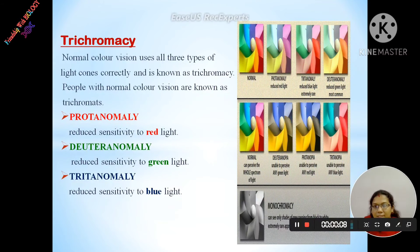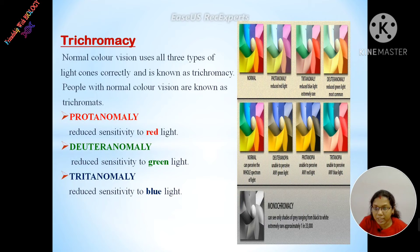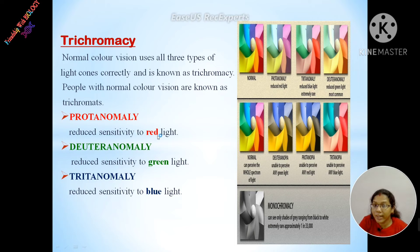Trichromacy refers to people with normal color vision. But in the case of Protanomaly, there is reduced sensitivity to red light. In the case of Deuteranomaly, there is reduced sensitivity to green light. In the case of Tritanomaly, there is reduced sensitivity to blue light.